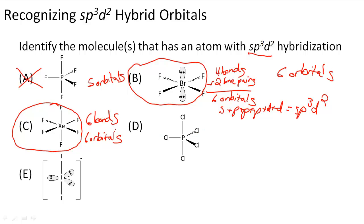Notice this is an octahedral shape and this is going to be a square planar shape. Both have 6 orbitals even though they have different combinations of lone pairs and bonds — their bonding is different, so we have different molecular geometries. But their hybridization is similar.